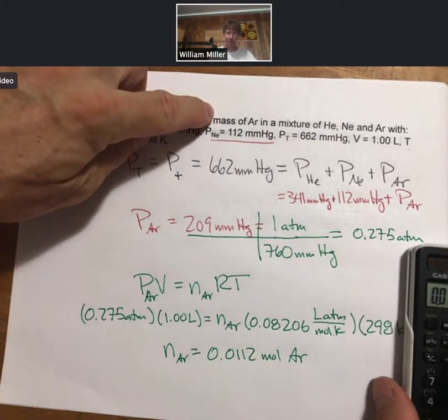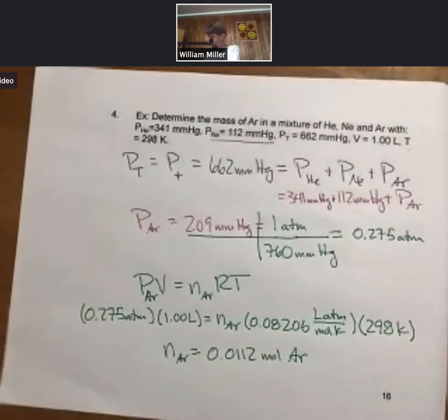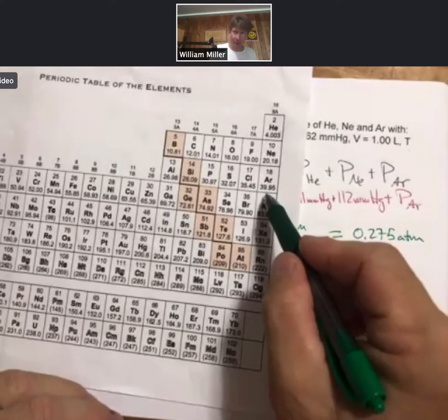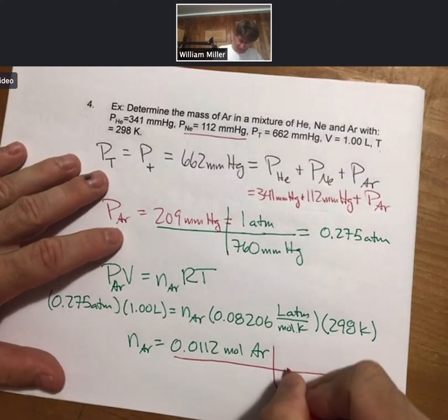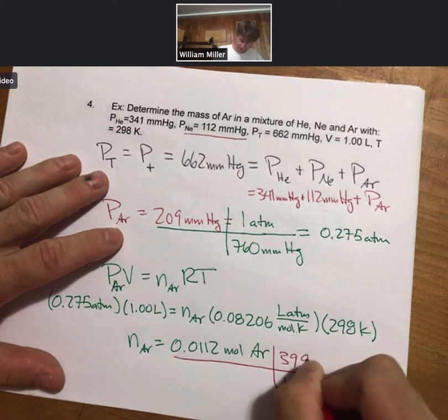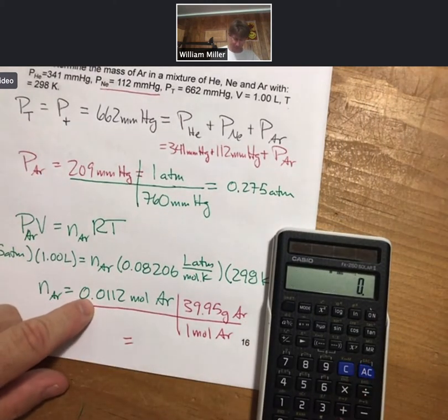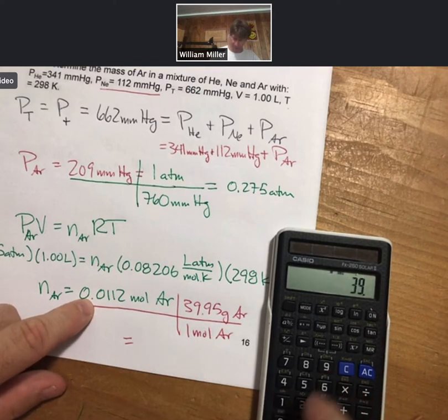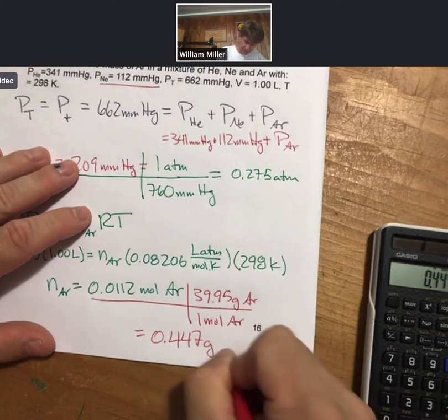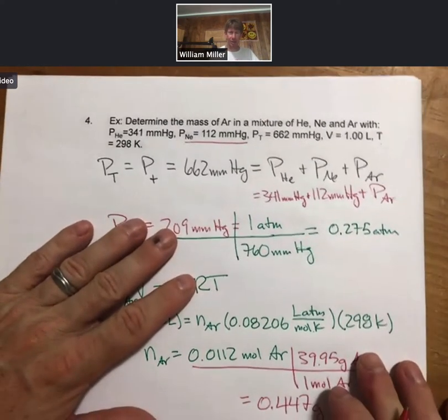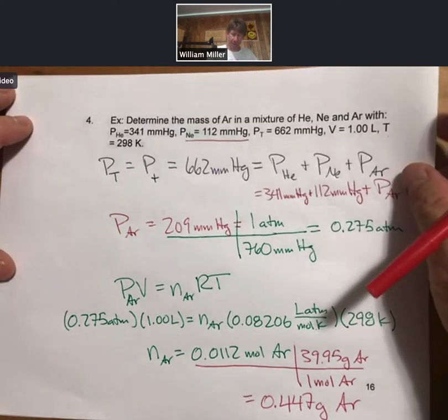Then we check in with our problem statement. It says we're not looking for moles, we're looking for mass. Now we need my periodic table, which I always keep somewhere around here. For argon, 39.95 grams per mole. 0.0112 times 39.95, 0.447 grams of argon. And that is our complete problem worked. And we started with Dalton's law of partial pressures and we ended with the ideal gas law.